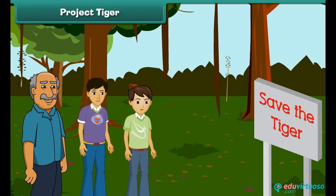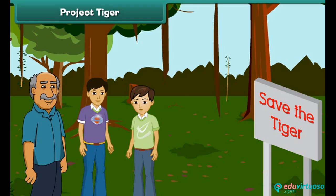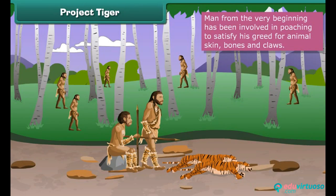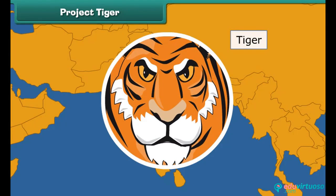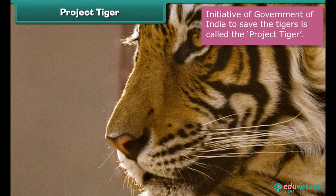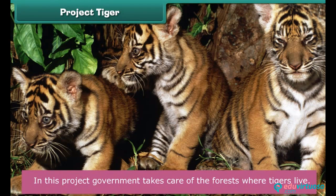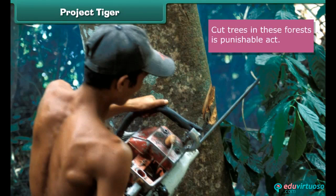Suddenly, Ram saw a board written 'Save the Tiger.' He asked his uncle why it was written on the board. His uncle replied that from the very beginning, man has been involved in poaching to satisfy his greed for animal skin, bones and claws, without caring for its effect on the diversity of the world. As a result, we have already made some species disappear from the earth forever. The Indian Tiger is also one of them. The Government of India has taken the initiative to save the tigers — this is called Project Tiger. In this project, the government takes care of the forests where tigers live, called Tiger Reserves. Killing tigers and cutting trees in these forests is a punishable act.